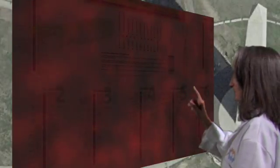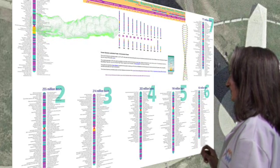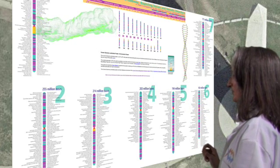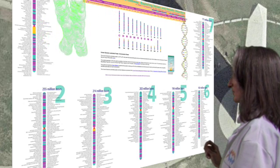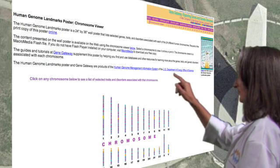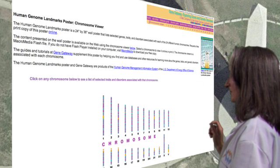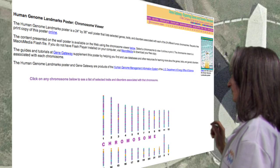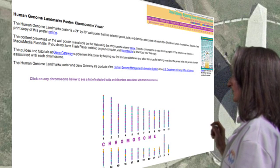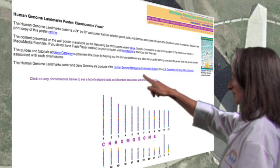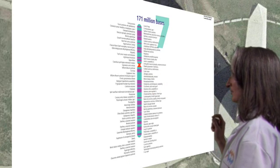The U.S. government maintains a website with much of the current information about genes, chromosomes, and proteins. In the section labeled Chromosome Viewer, you can select a chromosome and see how many base pairs or letters are on the chromosome. When you get to the webpage for each particular chromosome, you can see a list of traits and disorders associated with genes on that chromosome.